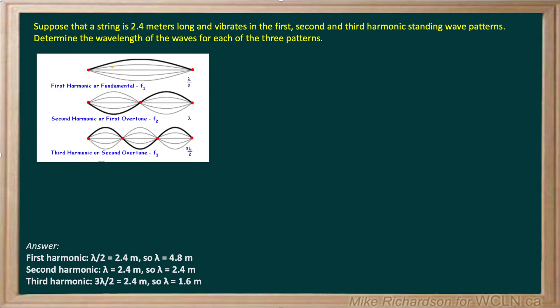So the first harmonic is when there's a node at either end and one anti-node in the middle. And you'll recall that if the length of the string doesn't change, this distance here in every case is the same, it's 2.4 meters.